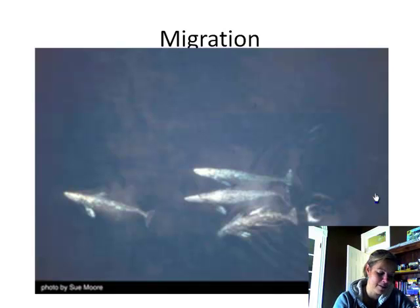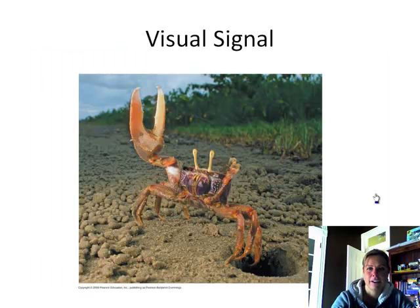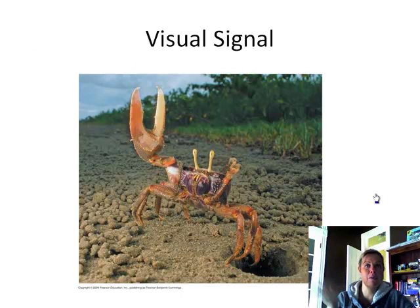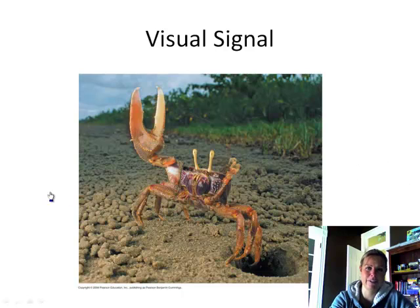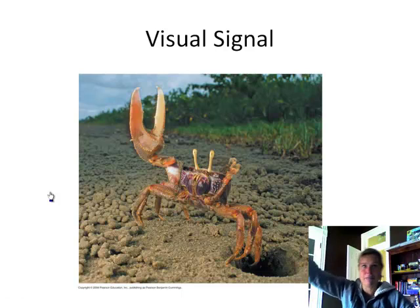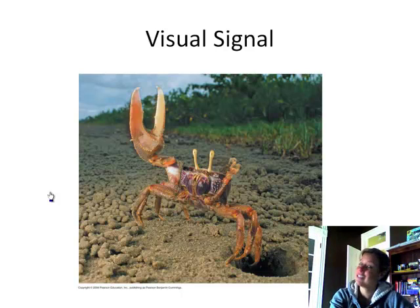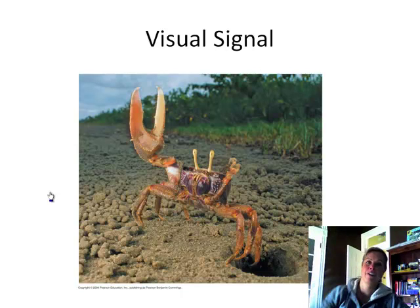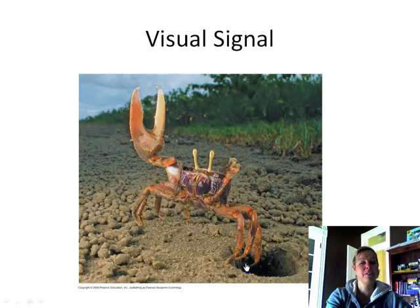There are several types of communication. Visual signals include waving and the fiddler crab, whose males wave their large claw at females to attract them. Size matters — the bigger the claw, the more females are attracted. The males then take the females into their burrow to mate. That's a visual signal because they're physically waving their claw.